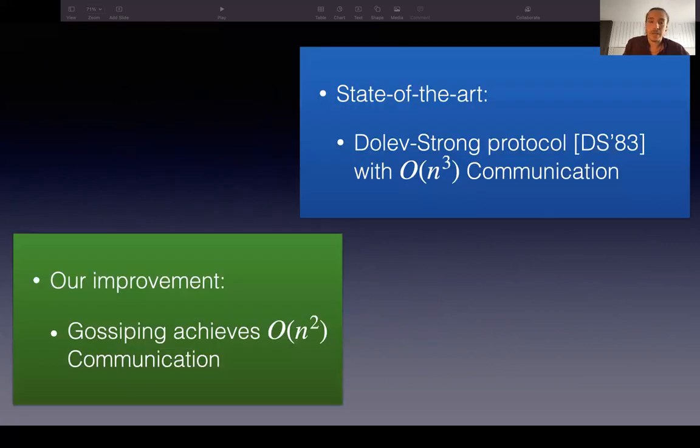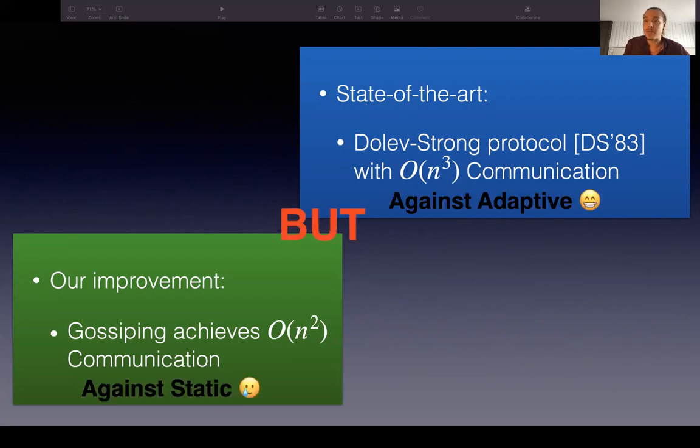What we show is that we can use gossiping to improve the Dolev-Strong protocol by a factor of n in terms of communication complexity. However, our idea doesn't fare well in terms of adaptive adversaries and is only secure against static adversaries. This tradeoff, as well as another observation, are the motivation for the next improvements that we make.